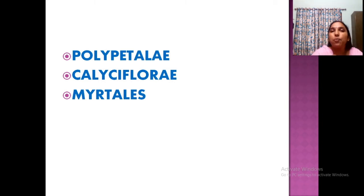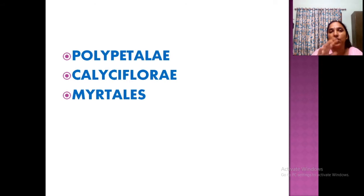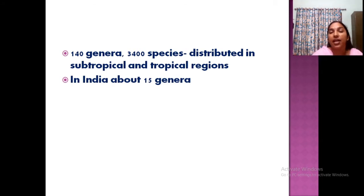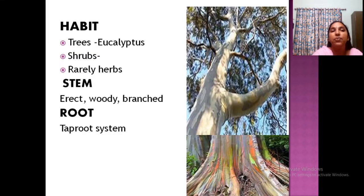The systematic position of Myrtaceae: it belongs to Polypetalae, series Calyciflorae, and order Myrtales. Calyciflorae is the series and Myrtales is the order. Calix refers to the prominently cup-shaped structure. The family includes about 140 genera and 3400 species, distributed in tropical and subtropical regions. In India there are about 15 genera under Myrtaceae. This family is very important because the largest trees, the eucalyptus, belongs to this family.